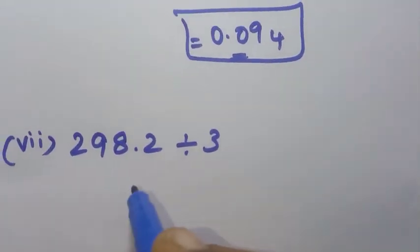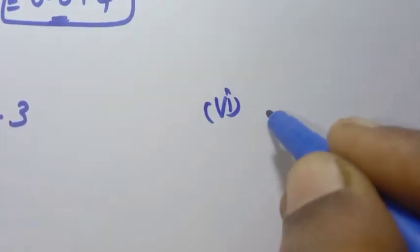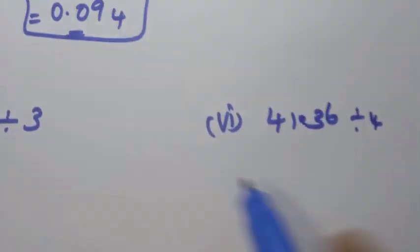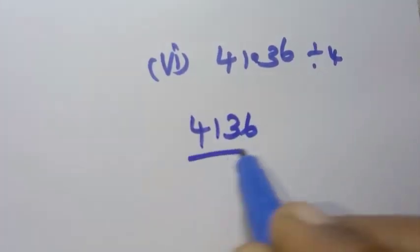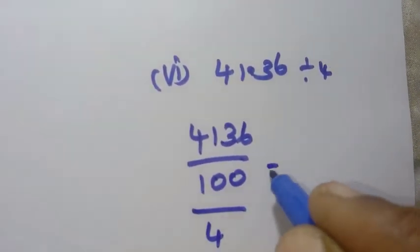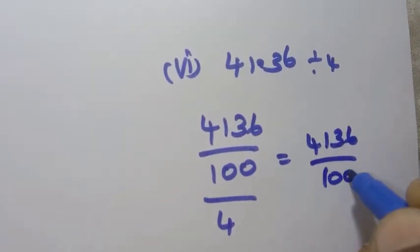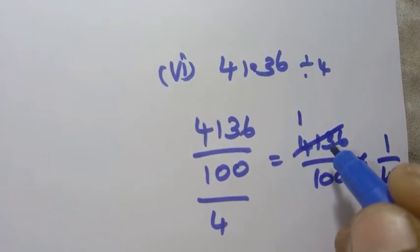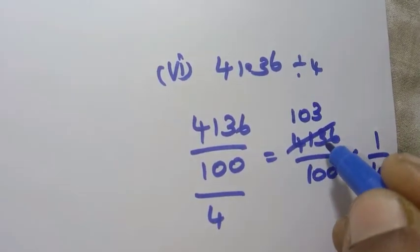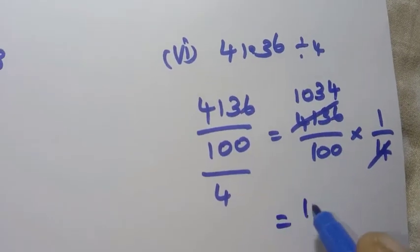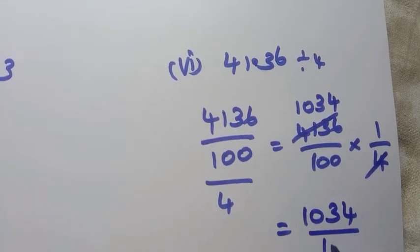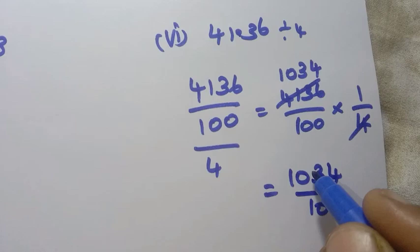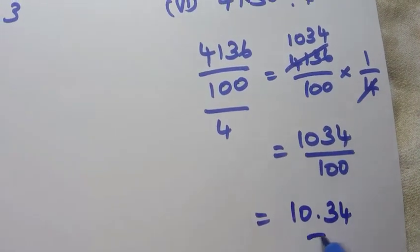Sixth problem: 41.36 divided by 4. 41.36 is 4136 by 100. Divided by 4, giving 4136 by 100 into 1 by 4. Cancel 4: 4 ones are 4, 4 threes are 12, 4 fours are 16 — giving 1034 by 100. Dividing by 100 gives two decimal places, so 10.34 is the answer.